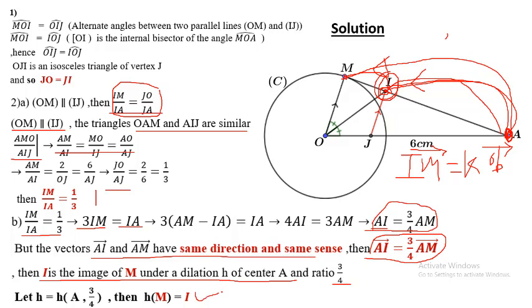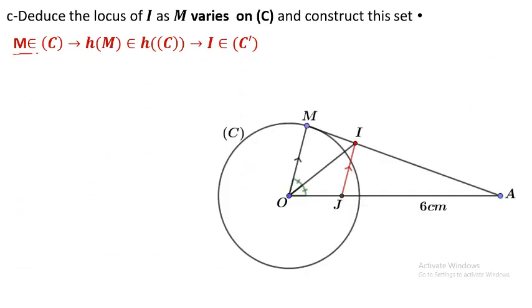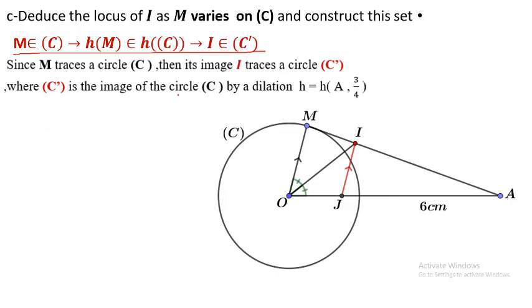If M moves on a circle, and I is its image, naturally it moves on circle C'. The new circle C' is the image of C. The main idea here: M on circle means I on circle C'. Now let's construct circle C'.